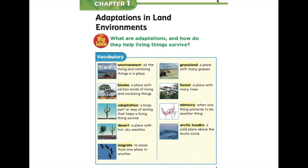Our sixth vocabulary word is grassland — a place with many grasses. Our seventh vocabulary word is forest — a place with many trees. Our eighth vocabulary word is mimicry — when one thing pretends to be another thing. And our last and final vocabulary word for chapter one is arctic tundra — a cold place above the arctic circle.